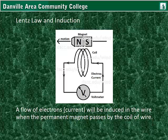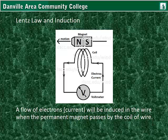No electrons are actually jumping from the magnet into the coil. Rather, the electrons that are already in the coil and within the wire are being coerced by this changing magnetic field.